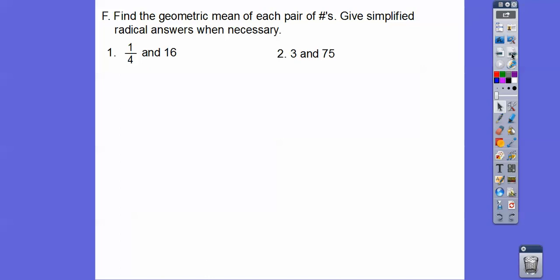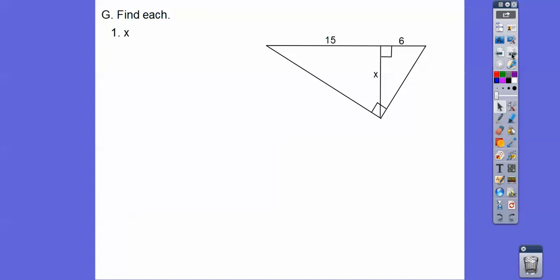Find the geometric mean between the pair of numbers. So geometric mean, that means put X in the bottom left and top right. And we're going to put the 1 fourth here and the 16 in here and the 3 here and the 75 here. And then cross-multiply. So those are both perfect squares, so we get those right there. So find X. So X is the geometric mean, bottom left, top right, between the two pieces of the hypotenuse 15 and 6. Cross-multiply. So 90 is 9 times 10. So a pair of 3's come out, 3 root 10.